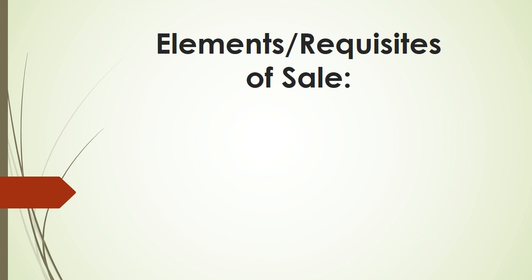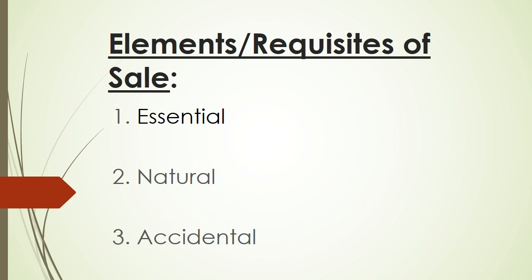Let us talk about the elements or requisites of sale. The elements or requisites are categorized into three: namely, essential, natural, and accidental elements or requisites. When you say essential elements or requisites, these are the so-called building blocks of the contract — not just the contract of sale but any other contract. Essential elements are those elements which, absent any of them, there is no contract of sale.